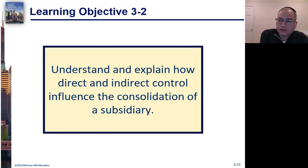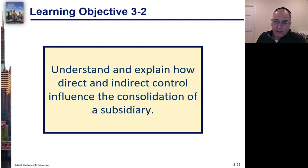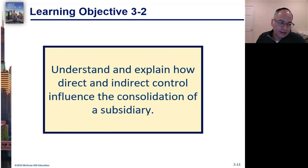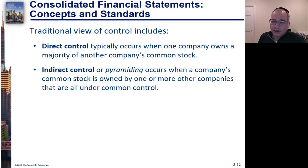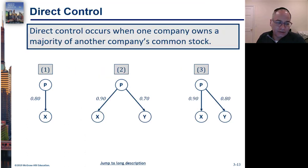Now we have the idea of control, and understanding control requires a little bit of flexibility and judgment. What we really want to understand is to what extent does the parent control the subsidiary. The parent doesn't necessarily just have direct control — direct control would be when the parent owns a majority of the subsidiary stock — but you could also have indirect control where the parent owns other companies that own the stock, and then things get a little bit complicated.